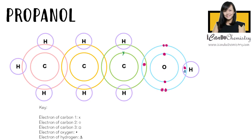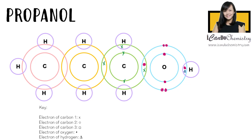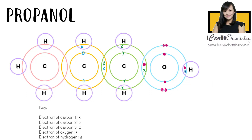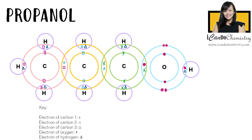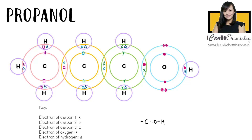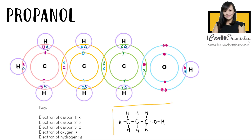What about propanol, which has three carbons? One of the carbons will share its electrons with oxygen, and the carbons will share one electron with each other. The carbons will then fulfill the octet rule by using their remaining electrons to form bonds with hydrogen. This is the dot and cross diagram of propanol. Let's replace each electron pair with a bond. We have achieved the structure of propanol.